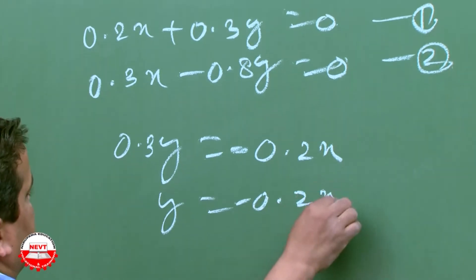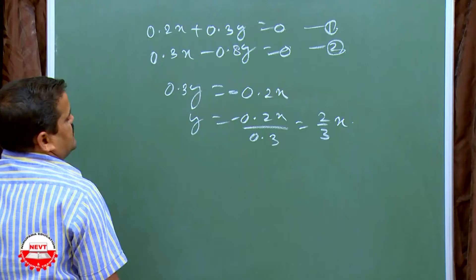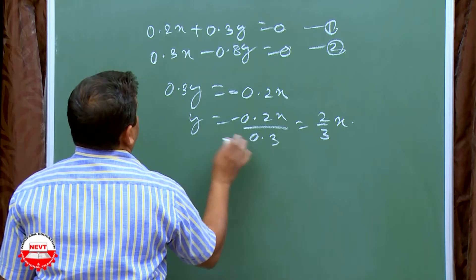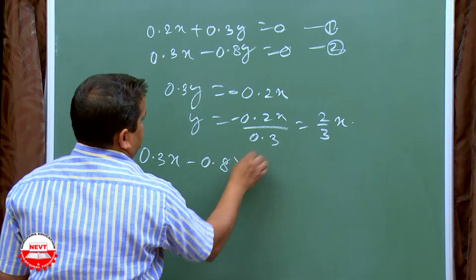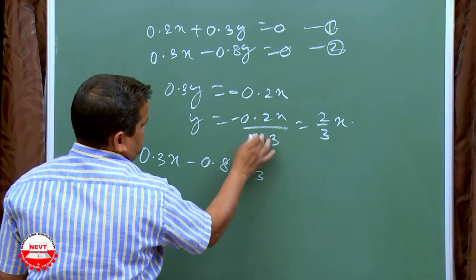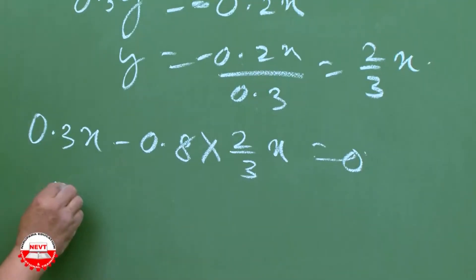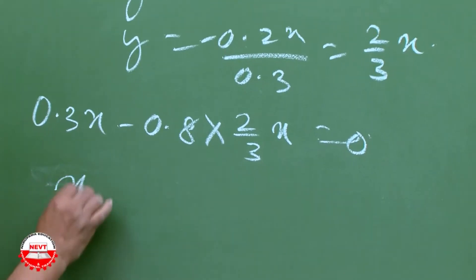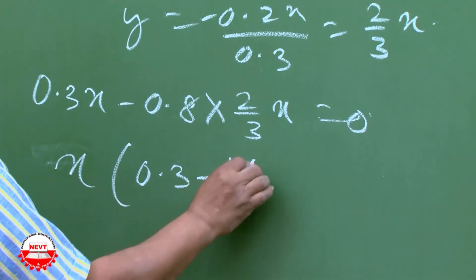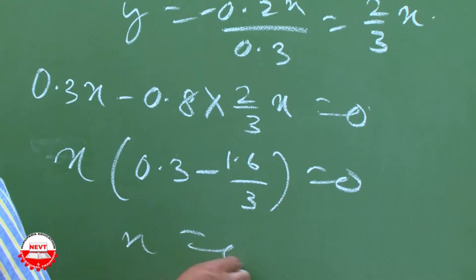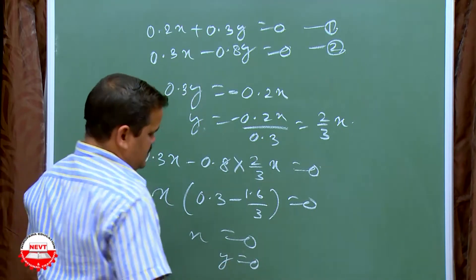Y is equal to minus 0.2X by 0.3, which simplifies to minus 2 by 3 times X. Now substitute this into equation 2: 0.3X minus 0.8 times (2 by 3 times X) is equal to 0. Taking X as common: 0.3 minus 1.6 by 3 equals 0, giving X equal to 0. Substituting back, Y is also equal to 0.